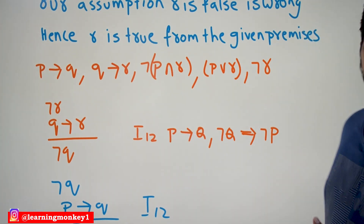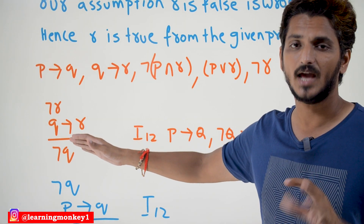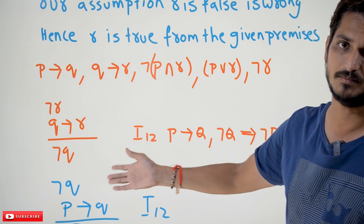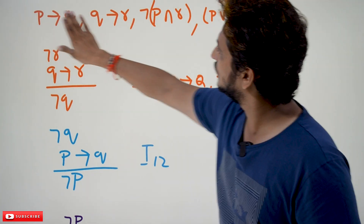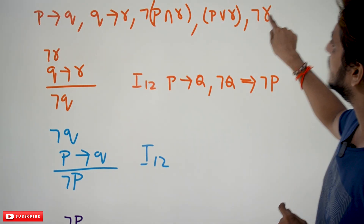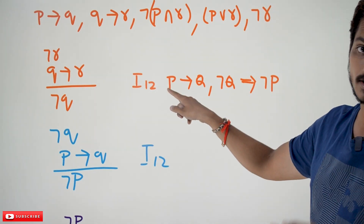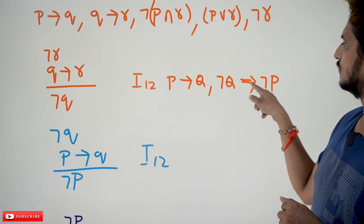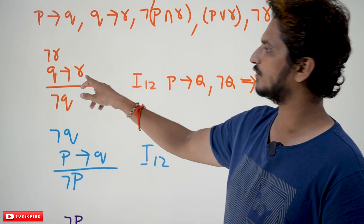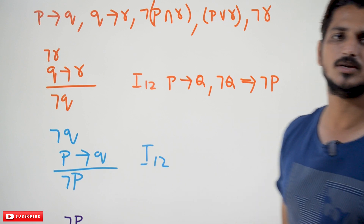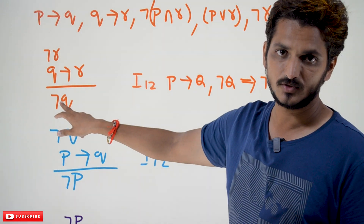Let's try to do this example. We are explaining it fast because our assumption is that you already have the basic understanding of how we are going to solve these examples. From the given set of premises, we know that negation R and Q implies R can be written as negation Q from inference formula I12. P implies Q, negation Q tautologically implies negation P. This looks the same as: negation R and Q implies R can be written as negation Q. So from this set of premises, we derived one more premise which is negation Q.